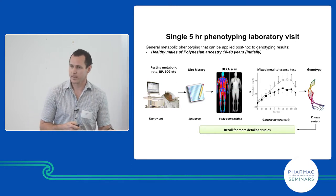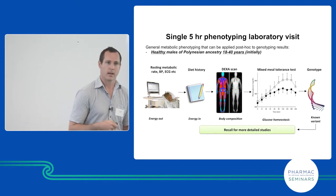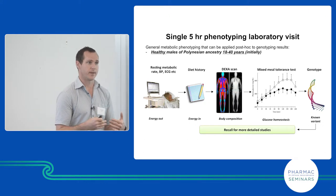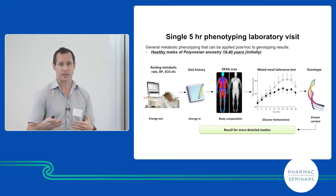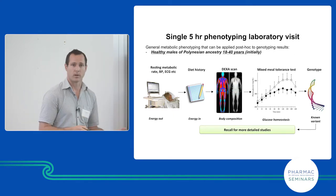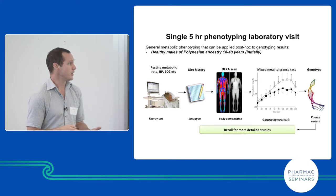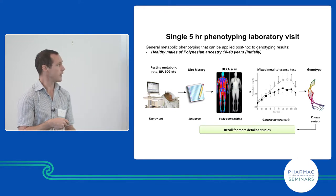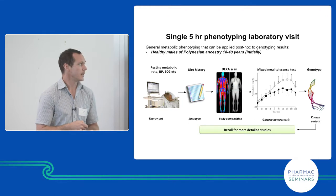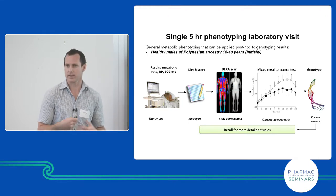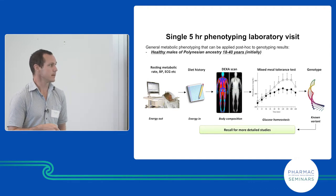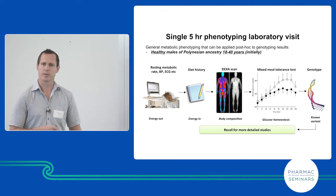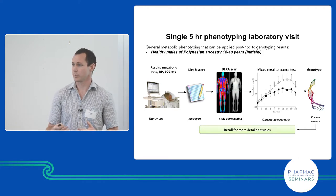The idea is we're recruiting healthy young men — soon to move on to also women — of Polynesian and Pacific ancestry, before any disease develops, to understand risk factors that might lead to disease later. We bring people in for about five hours of phenotyping, looking at things like energy expenditure, heart-related measurements, dietary intake, and body composition through a DEXA scan so we can look at fat mass, not just BMI. Then we give people a meal and measure the change in blood glucose and other hormones to see how they respond.